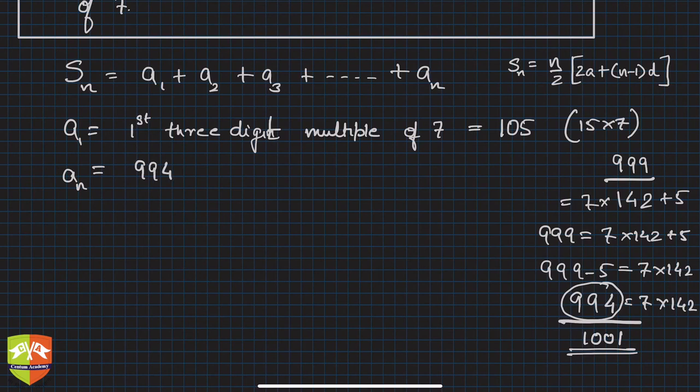So the last term is now known. How to find out n? Easy. An is nothing but the first term, that is 105, plus n minus 1 times the common difference.